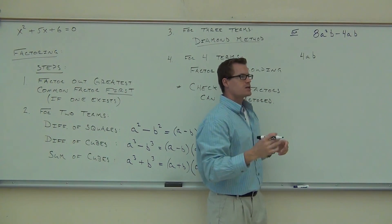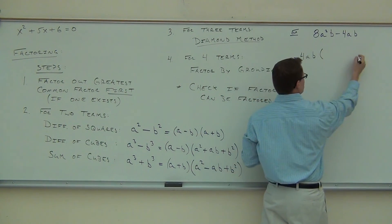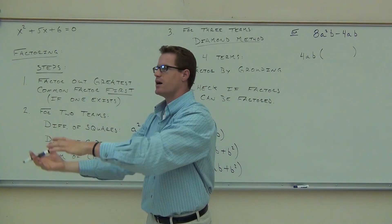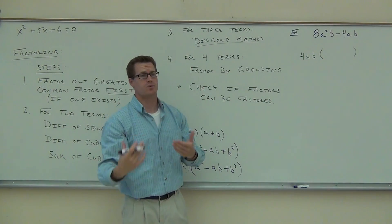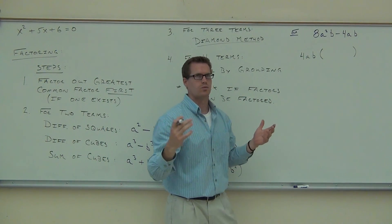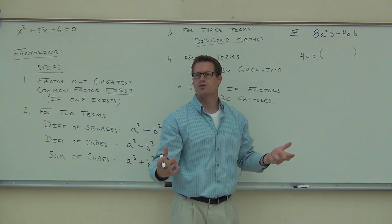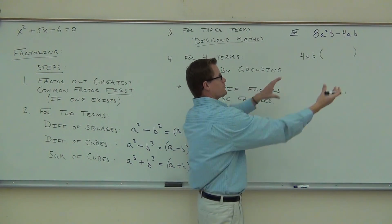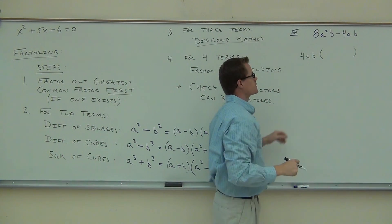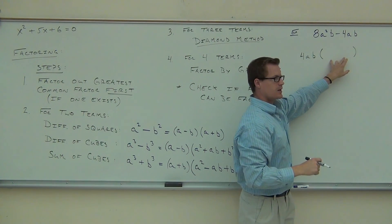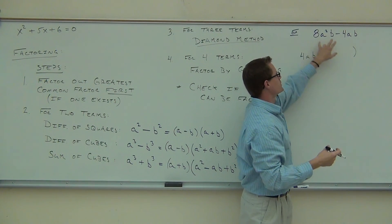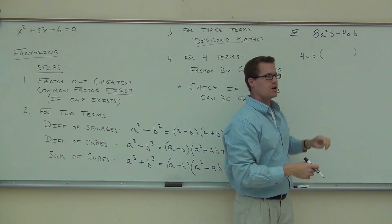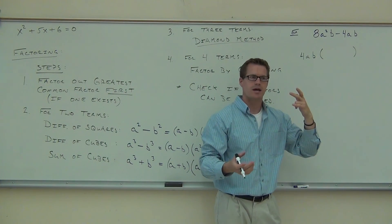This right here, what you just wrote down, is your greatest common factor. The four goes into both. The A goes into both. The B goes into both. And that's everything that they share. The next thing we do is we write a parenthesis. Because factoring is the opposite of distribution. Instead of multiplying in, we are dividing out. That means we're going to be creating parenthesis.